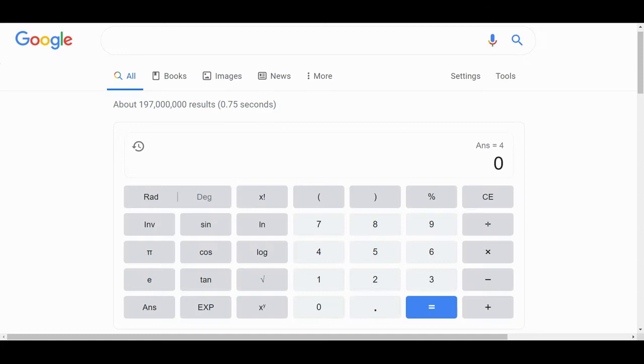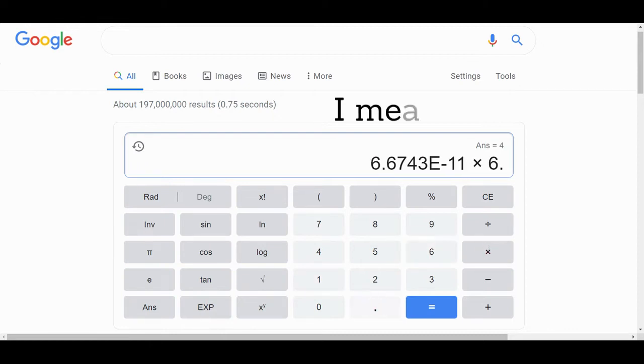To calculate the answer, I'm going to use the Google calculator. Let's enter the values: 6.6743 exponent minus 11 times 6.4271 exponent 23 times 2,180 divided by 3.802 exponent 6 and then divide by 3.802 exponent 6 a final time. We find an answer of 6,459.17.